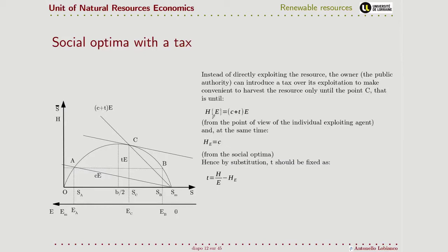And we can set this tax considering that the marginal harvesting over the effort must be equal to the marginal cost, and then considering that the harvesting as a function of the effort will be, in this case, equal to the cost plus the tax that multiplies the effort. And by substitution here, we can find the optimal amount of tax that we should set in order to arrive to the same equilibrium point.